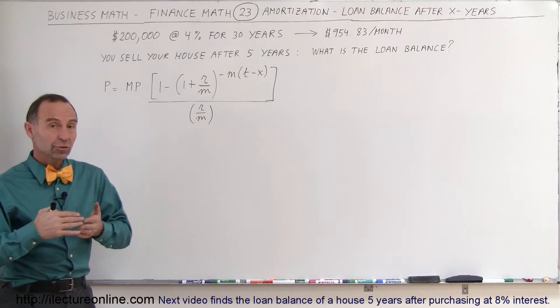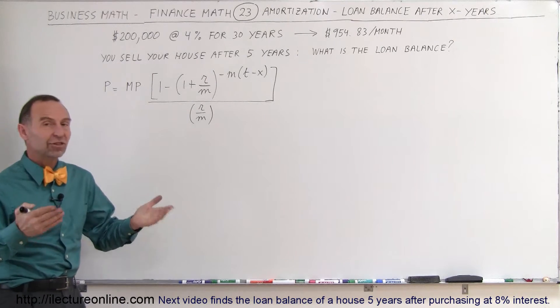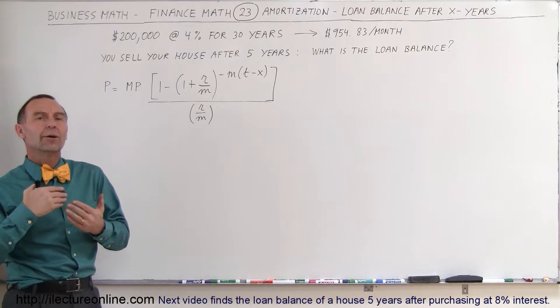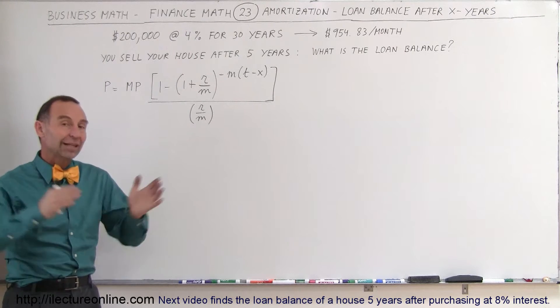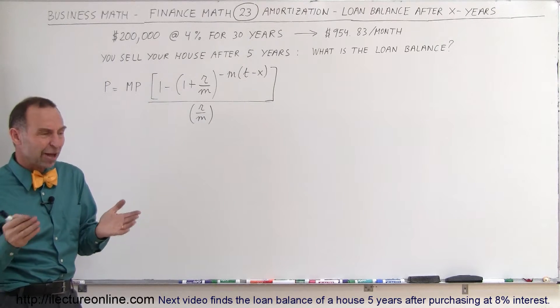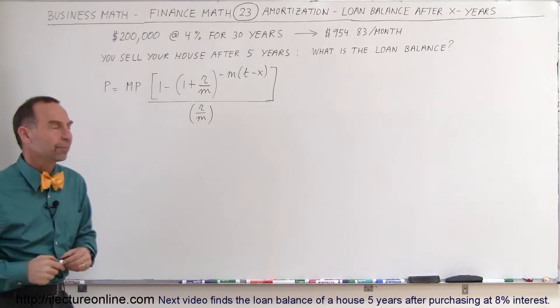especially when you decide to sell your house. Let's say somebody buys a house, and after five years they sell it, and they want to know how much they have left to pay to the bank. All their payments that they made over the last five years, which would be 60 payments, how much of that actually went to principal and how much of that went to interest.